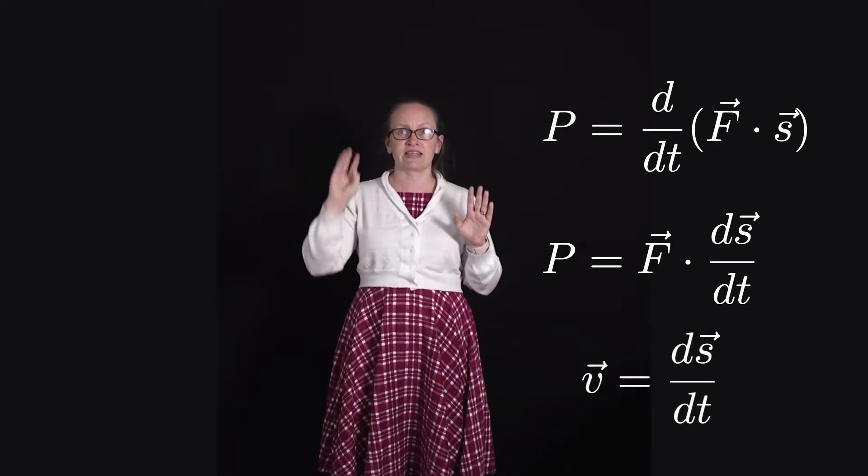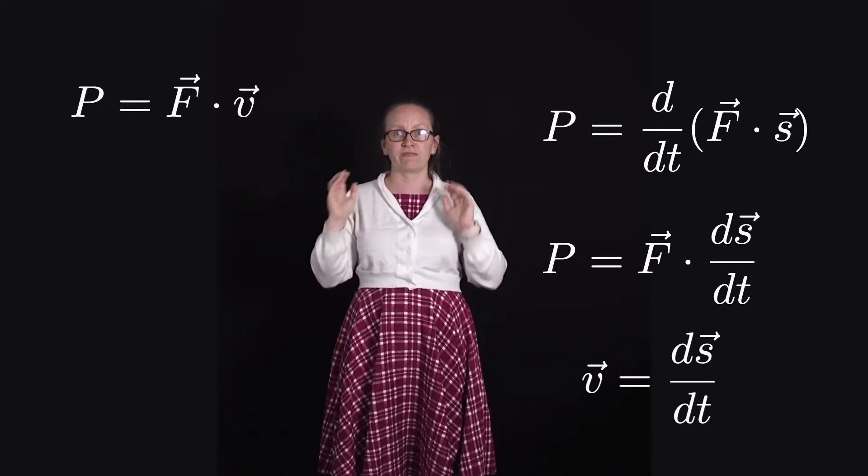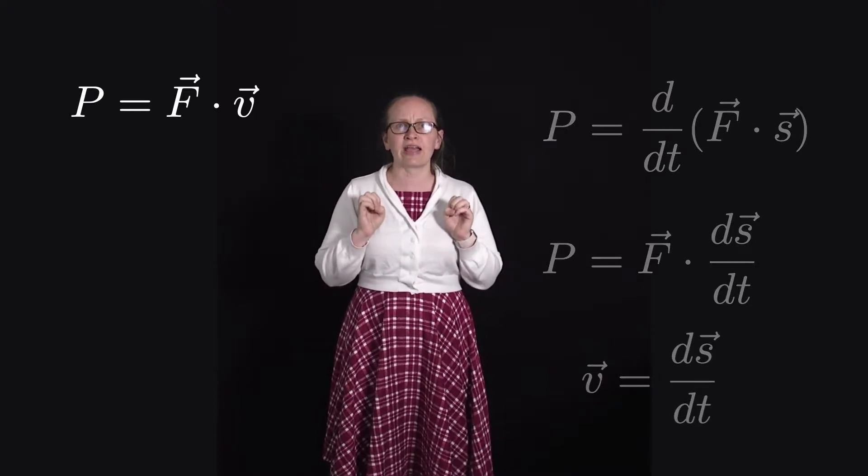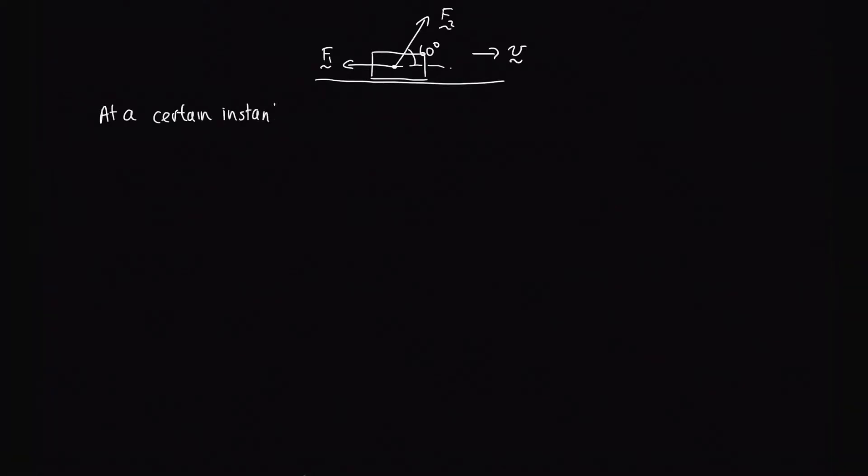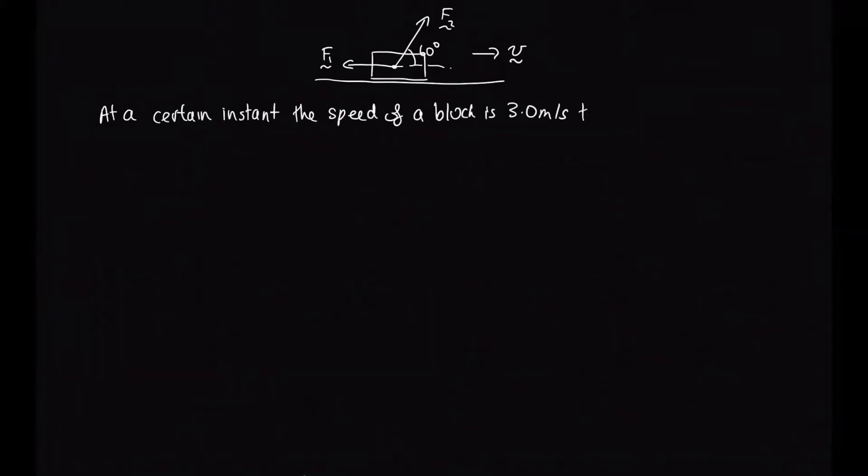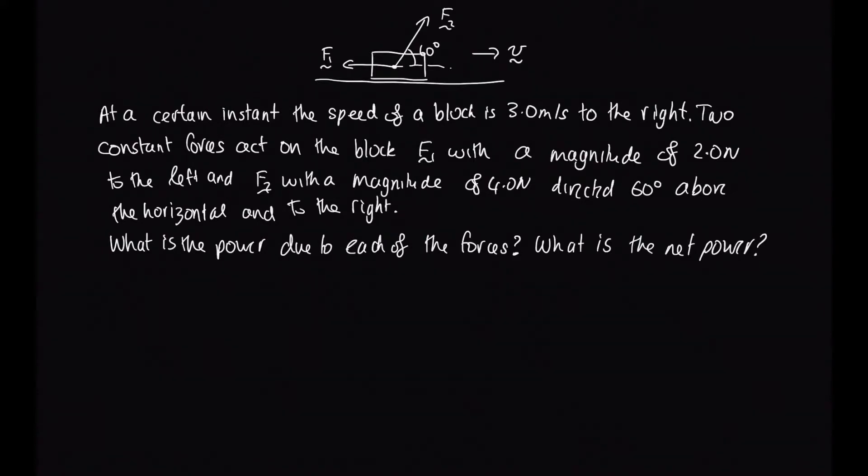So we can replace that ds/dt with v and we get that the power is equal to F dot v. So let's have a look at an example of how we can use this now. At a certain instant the speed of a block is 3.0 m/s to the right. Two constant forces act on the block: F1 with a magnitude of 2.0 newtons to the left, and F2 with a magnitude of 4.0 newtons directed 60 degrees above the horizontal and to the right. What is the power due to each of these forces? What is the net power? Is the net power changing?